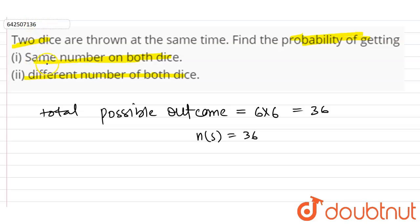Now, the first part is we have to find the probability of getting the same number on both dice. So let E1 be the event of getting same number on both dice.